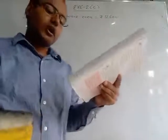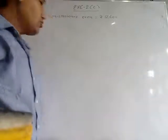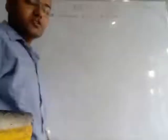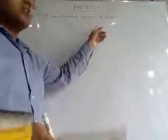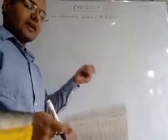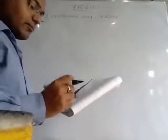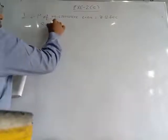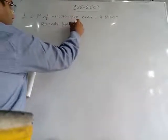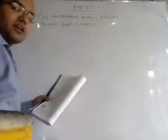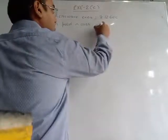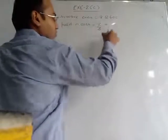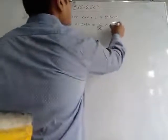Rajesh paid two-thirds of the price in cash. The total cost of the microwave is 12,600 rupees, but Rajesh does not have that much money. He is giving a few amount out of 12,600 in cash. The fraction two-thirds is given, not rupees. So we multiply two-thirds by the total cost of 12,600.